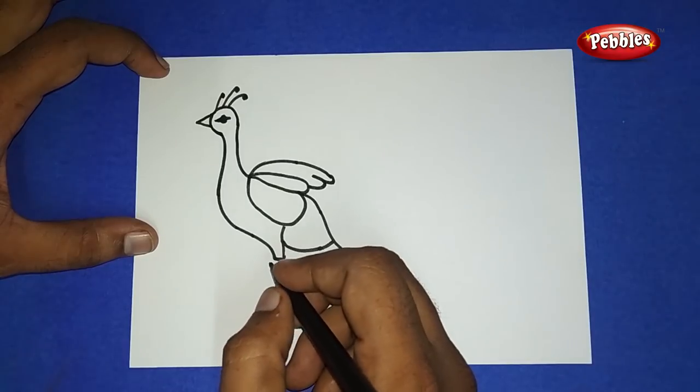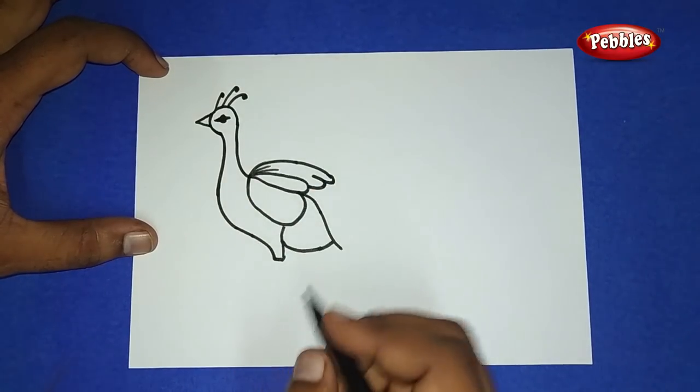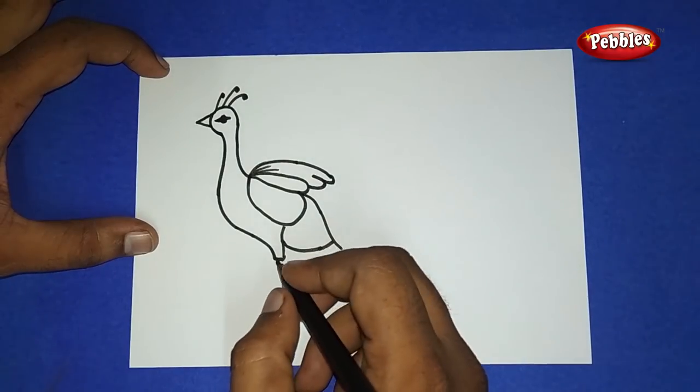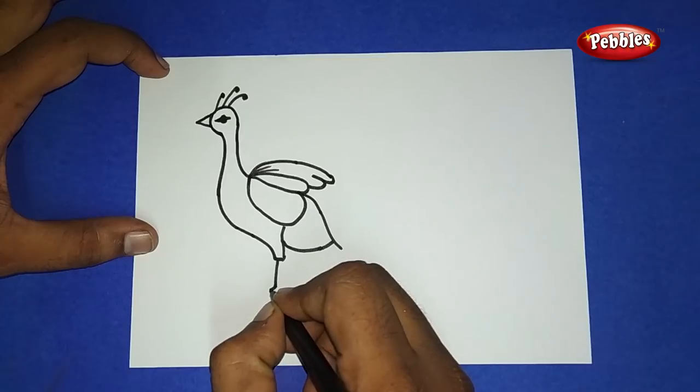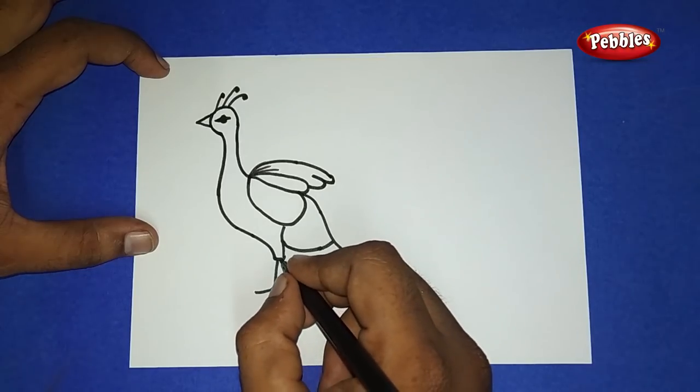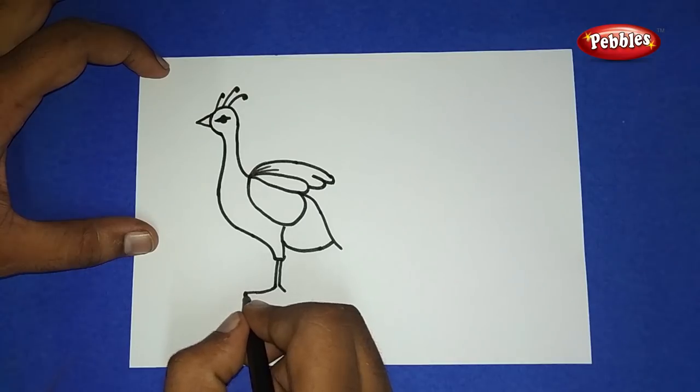At the top feather, draw two slanting lines. Coming to down, hit leg part. Draw two straight lines and a leg jaw like this.